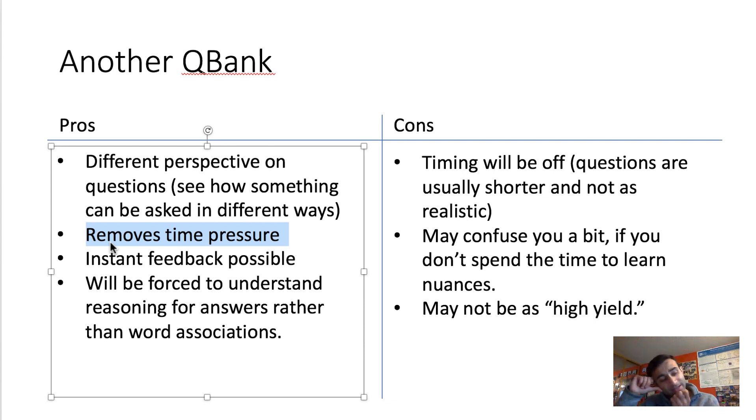And by doing a second QBank, I can actually just kind of take my time, you know, look at the question, I would spend maybe five to 10 minutes sometimes on Amboss questions and be like, what am I missing here? I know what the answer is, but I don't know why I just don't understand what the answer is, you know? So I'd be able to spend that time. And so that time pressure was a pro for me because it removed it.